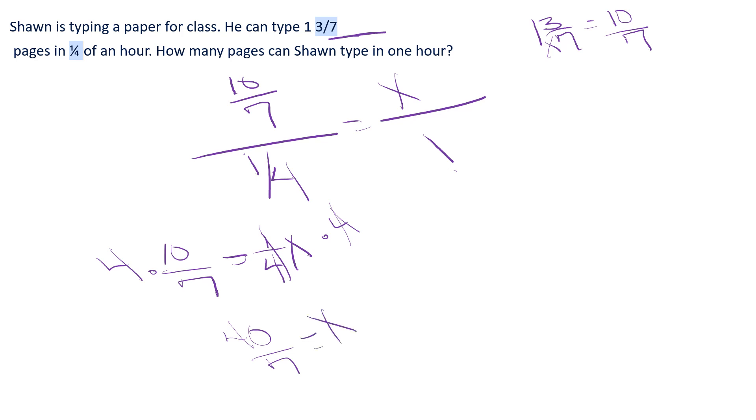7 goes into 40, 5 times, that's 35, with 5 left over. And I get my answer is 5 and 5/7 pages.